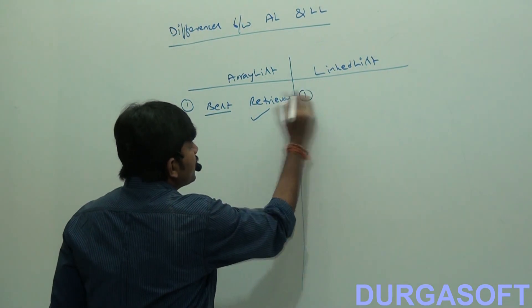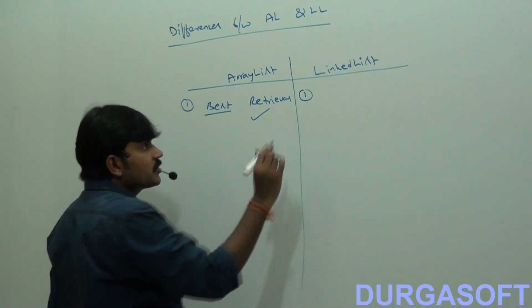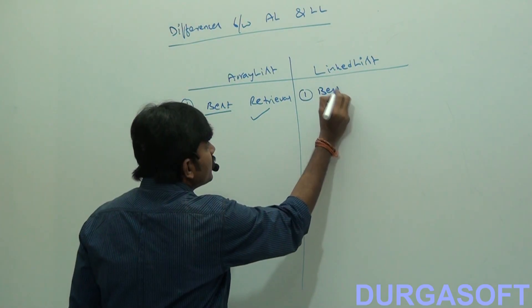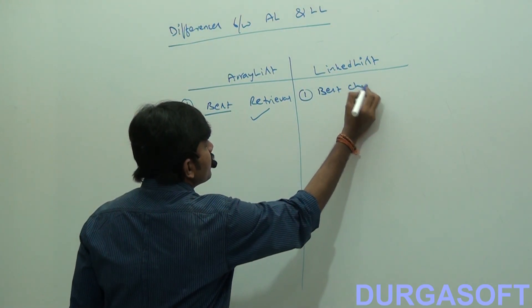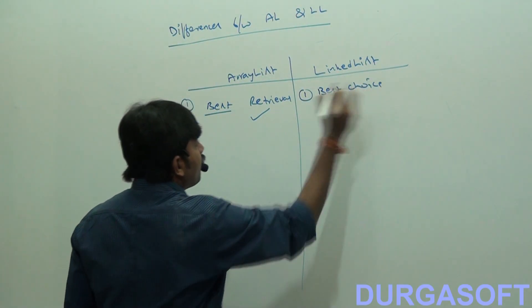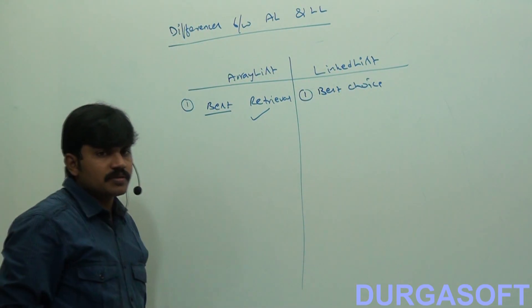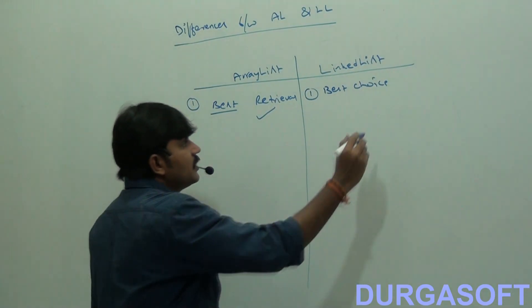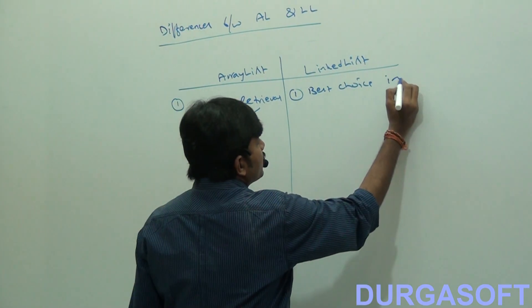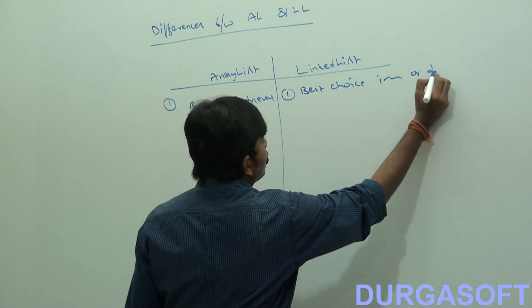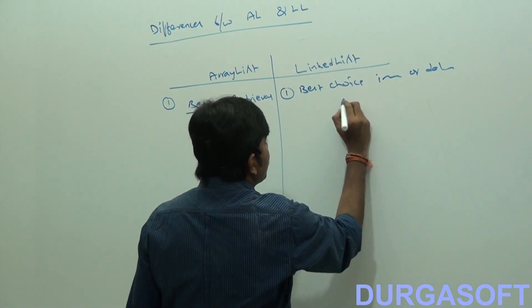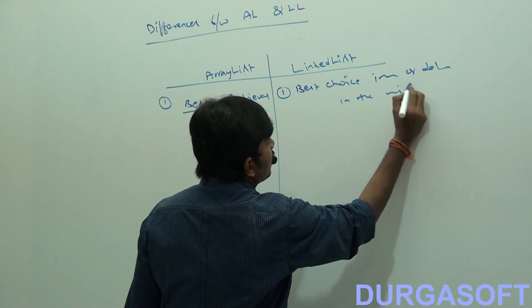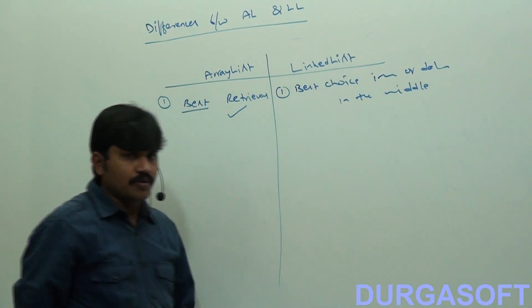LinkedList is worst for retrieval. But LinkedList is the best choice if our frequent operation is insertion or deletion in the middle.